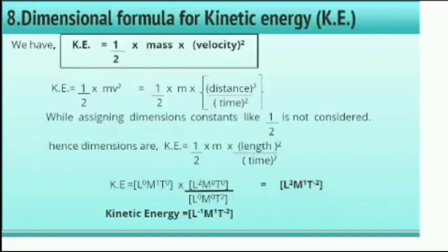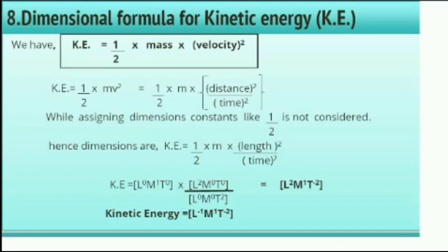The next example is kinetic energy. The formula for kinetic energy is one-half into mass into velocity squared, so kinetic energy equals ½ × M × distance² divided by time². While assigning dimensions, constants like ½ are not considered. The dimensional formula for kinetic energy is [L², M¹, T⁻²].